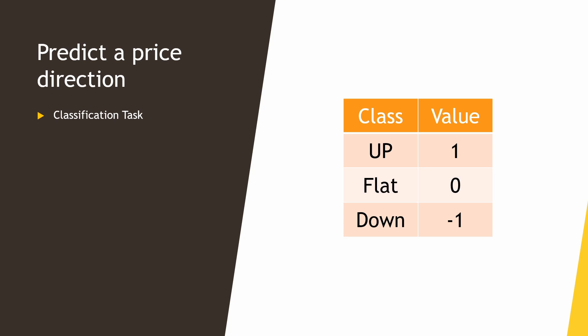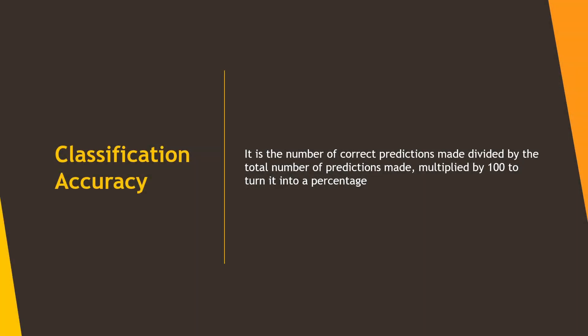For a start, as a measurement of how well our model predicts the direction, we can use accuracy. Classification accuracy is the number of correct predictions divided by the total number of predictions, multiplied by 100 to turn it into a percentage.